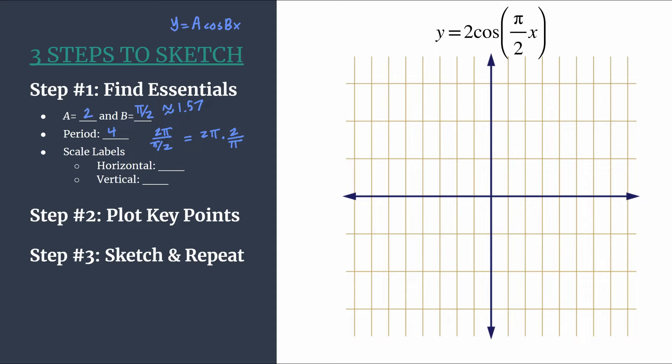So the length of our horizontal cycle is going to be 4. Let's go ahead and pick some scale labels. Remember, we do the horizontal scale labels very intentionally to help us with the pattern in the next step. We take our period and divide by 4 to choose a value for the horizontal scale labels. So in this case, 4 divided by 4, that's just 1.